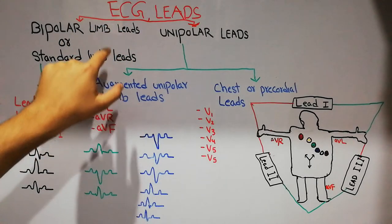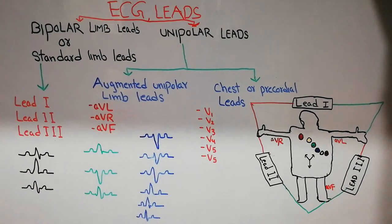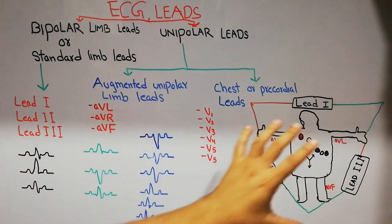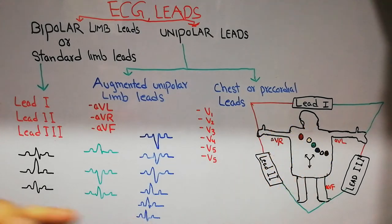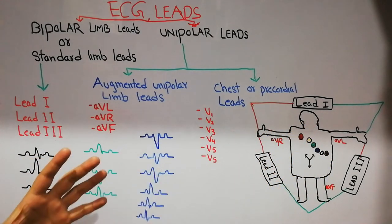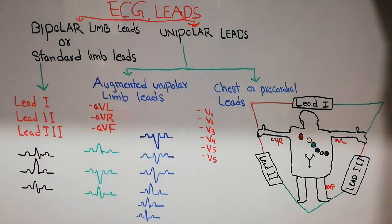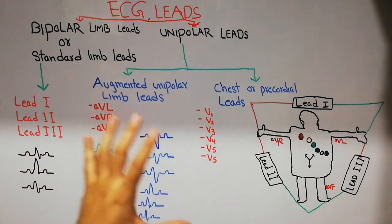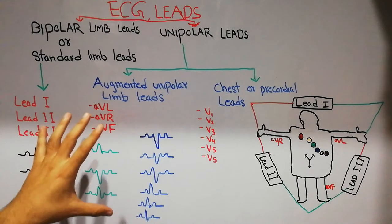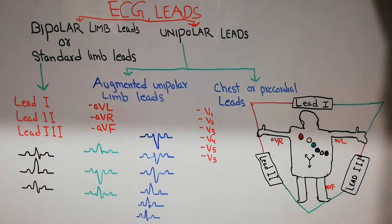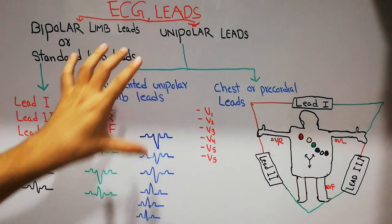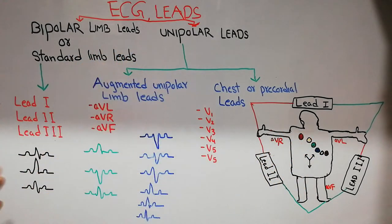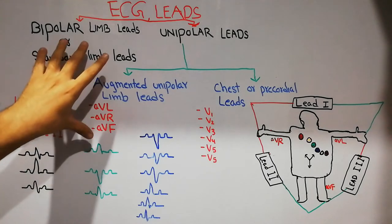In this lecture we are going to discuss the ECG leads. We have already discussed that the electrical activity generated inside the human heart is generated by the sinoatrial node, conducted through the atrioventricular node, the AV node and the Purkinje fibers into the cardiac muscles. That electrical activity can be recorded with the help of the ECG machine or electrocardiogram. To record that electrical activity on paper we need a machine with which some leads are attached.